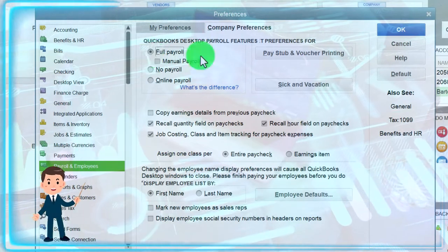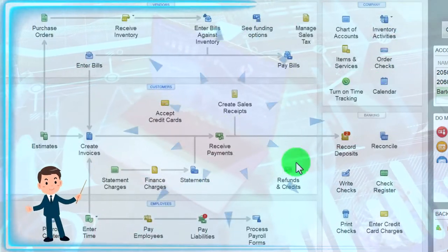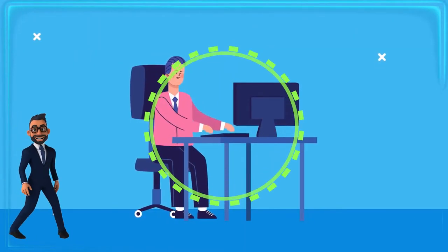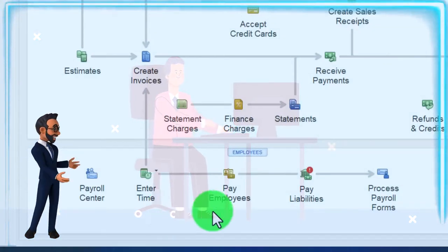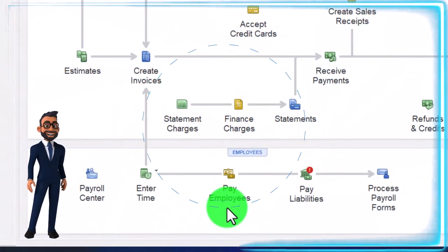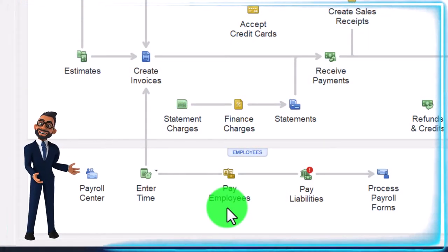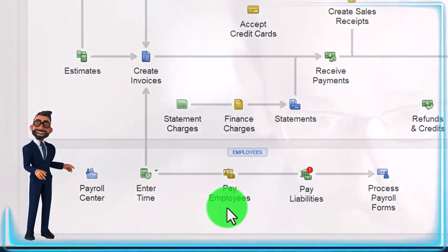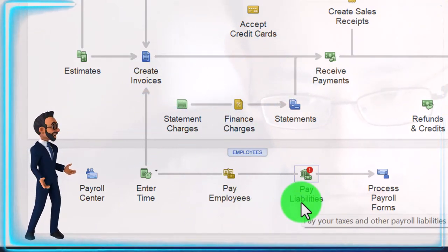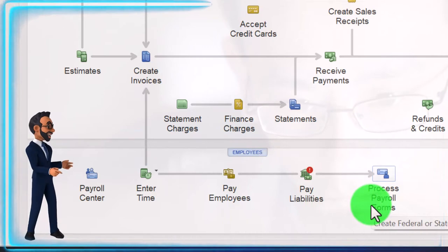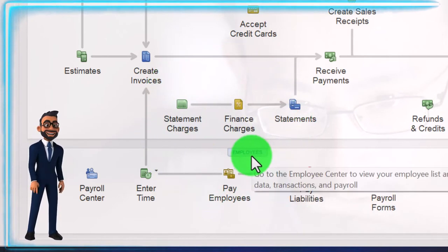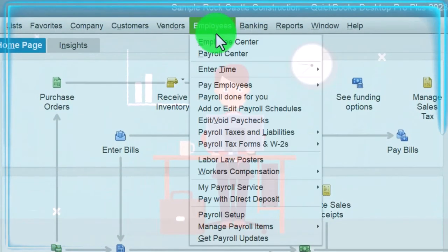Once payroll is set up we can go through the payroll process. We can optionally enter time, then pay employees bi-weekly, semi-monthly, or on whatever schedule is set up. We deal with withholdings and payroll taxes, pay the liabilities for the withholdings and payroll taxes, and then process the payroll forms — which typically happen quarterly and yearly. We can go to the center here or via the Employees and Payroll Center.